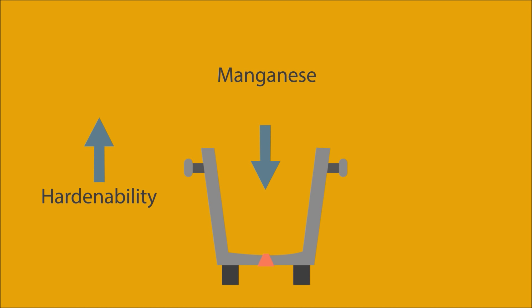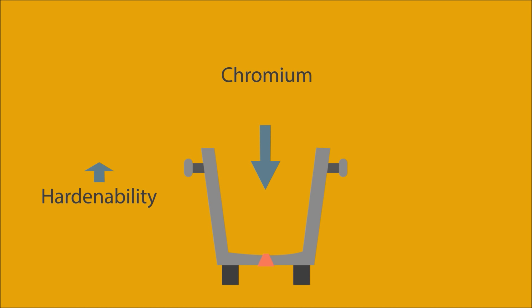Manganese has a great effect on hardenability and can be found in most commercial steels. Manganese can strengthen the steel through solid solution strengthening. It also combines with sulfur to prevent hot shortness.